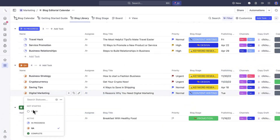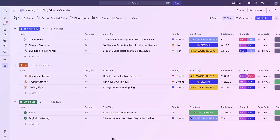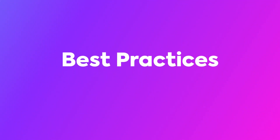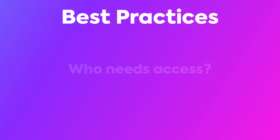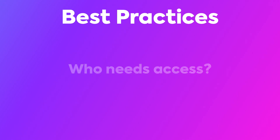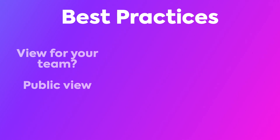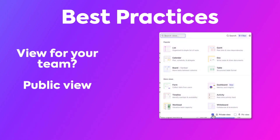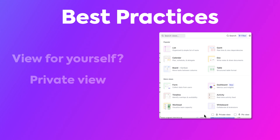Before we begin with Views, let's talk about some best practices. Ask yourself: who needs access to this view for your project? If the answer is your team and you need a centralized place to work together, make it a public view for your team. Otherwise, if you want to make a view specific to yourself and track your work your own way, consider creating a private view for yourself and encourage your other team members to do the same.